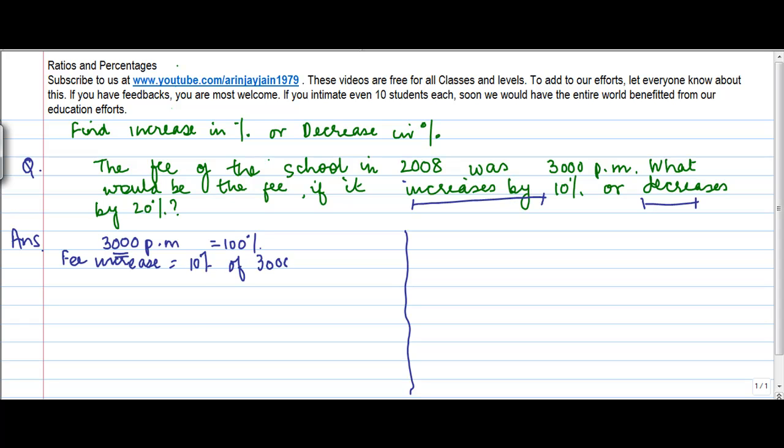3,000, right? Because 3,000 was the fee and there was an increment of 10%, so therefore it was 10 divided by 100 into 3,000. So we cancel out these two zeros from here and we get 300. So the increase in the fees is equal to rupees 300. Now I know my earlier fees was 3000, the increase is 300.